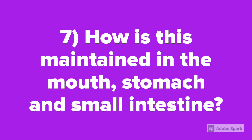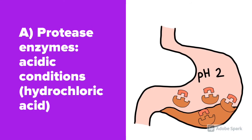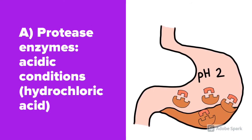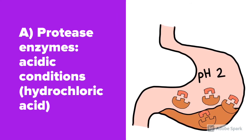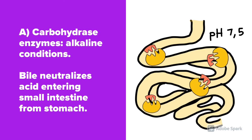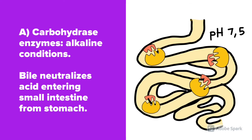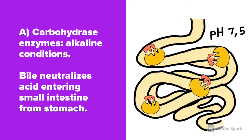Question number 7: How is this maintained in the mouth, stomach, and small intestine? Protease enzymes work best in acidic conditions, which is provided by the hydrochloric acid produced in the stomach. Carbohydrase enzymes require alkaline conditions, which is why bile neutralizes acid entering the small intestine from the stomach.